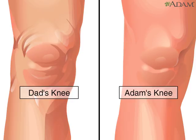The image zooms in on the right knee of each pair of legs. The knee with the more saggy skin is labeled older person's knee. The other knee, which is more muscular, is labeled younger person's knee.